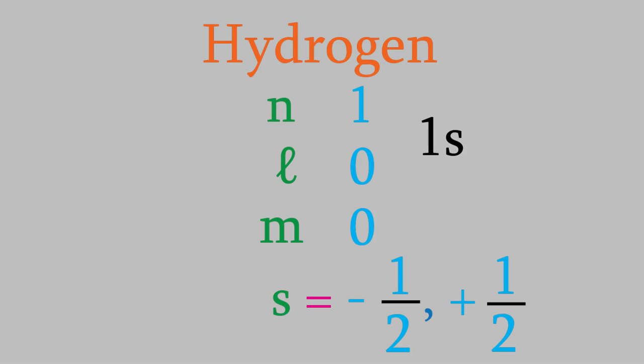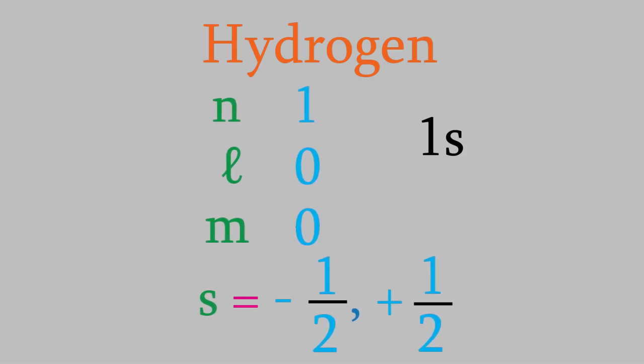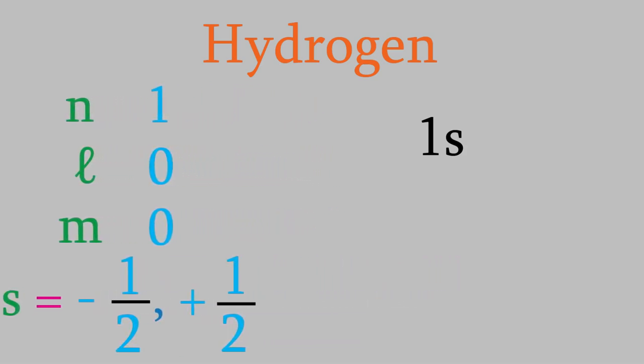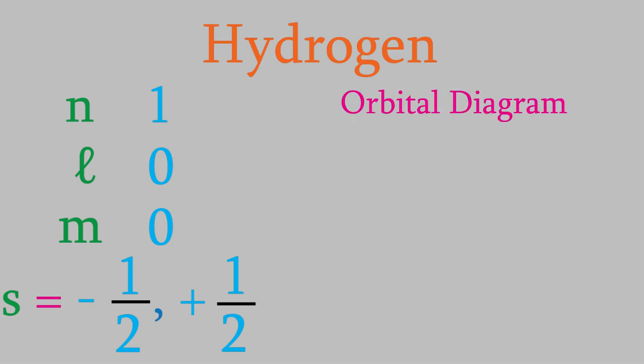It's such important information that chemists have developed two different ways of summarizing it. The first way is called an orbital diagram. In an orbital diagram, we draw boxes for each type of orbital in our atom. In the case of hydrogen, we only have one orbital — the 1s orbital — so we only have to draw one box. We also label the orbitals, so we'll label this one with a 1s. Next, in each box, we draw each electron using an arrow. We usually draw up arrows for spin positive one-half and down arrows for spin negative one-half. Since we don't know the spin, I'll draw an up arrow.